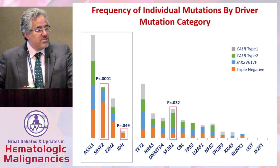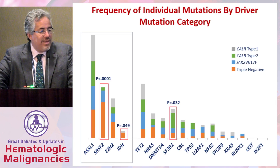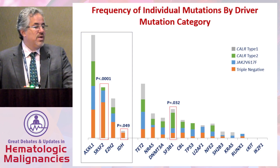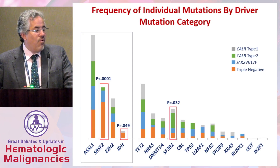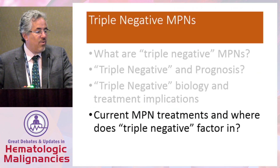Indeed, as one looks at the frequency of these bad-acting mutations by driver mutation category, in orange you see the triple negative patients, where the worst actors — ASXL1, SRSF2, EZH2 — are all seemingly over-represented. In particular, SRSF2, IDH, and SF3B1 are all over-represented in individuals who are triple negative.